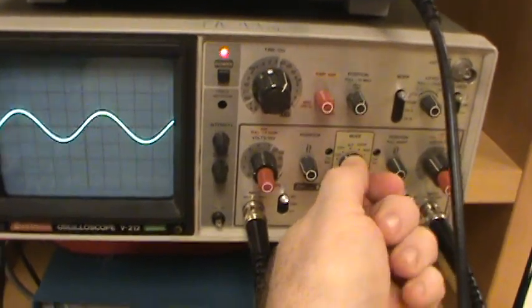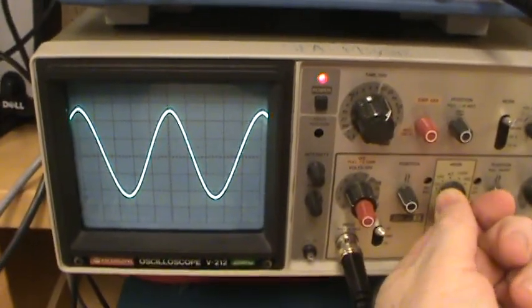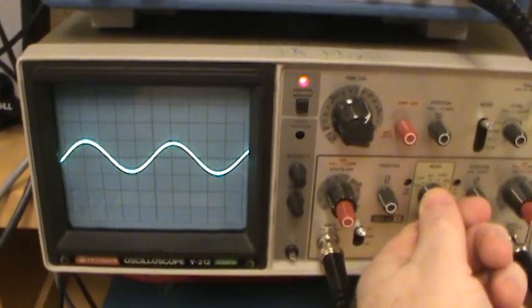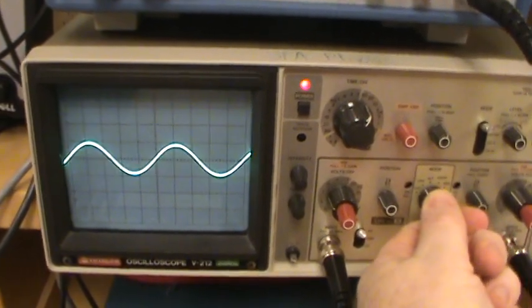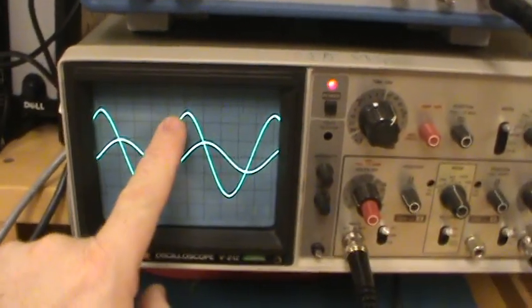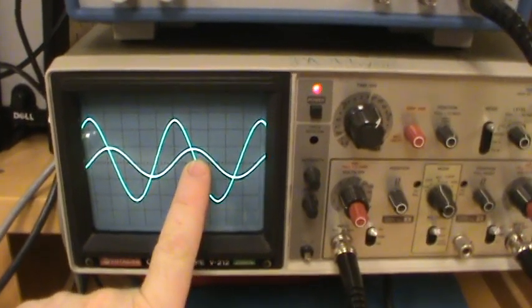The way to do that is if you grab this knob and put it on channel 1, you see that that is the higher peak and this is the lower peak. Channel 1 and then channel 2, and that means that channel 1 is leading channel 2.